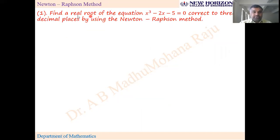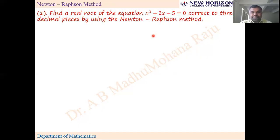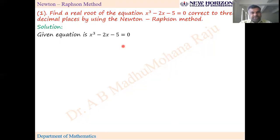Find a real root of the equation x³ - 2x - 5 = 0, correct to three decimal places, using Newton-Raphson method. The reason to study Newton-Raphson method is that it converges faster than the regular false position method. I took the same problem you did in the false position method — there you got the root in the eighth or ninth stage; here we will get it faster.